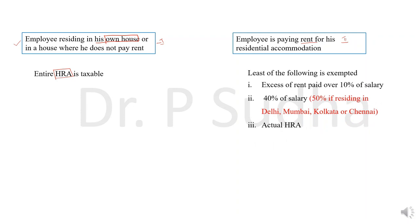In the second situation, before calculating the taxable amount, first we have to calculate the exempted amount. To calculate the exempted amount, we have to compare three values. The first value is excess of rent paid over 10% of salary. The second value is 40% of salary — but if the employee is staying in a house situated in Delhi, Mumbai, Kolkata, or Chennai, we take 50% instead of 40%. The third value is the actual amount of HRA received. Out of these three values, the least value will be exempted.